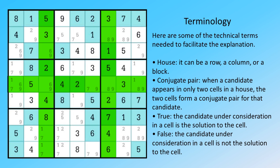Here are some of the technical terms needed to facilitate the explanation. House: it can be a row, a column, or a block.